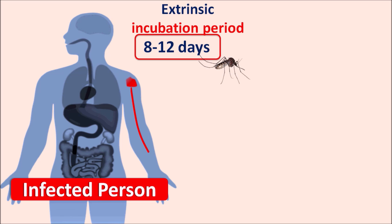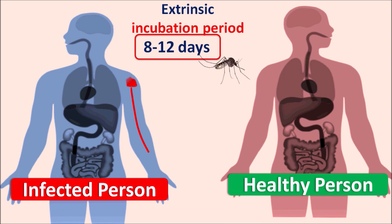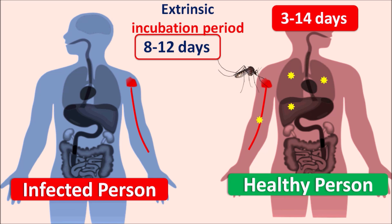When this mosquito attacks a healthy person, on biting, these variants are transported through the blood and enter into the circulatory system, as well as major organs such as the lungs, liver, and heart, where the variants are again replicated. This takes around 3 to 14 days, which is called the intrinsic incubation period.